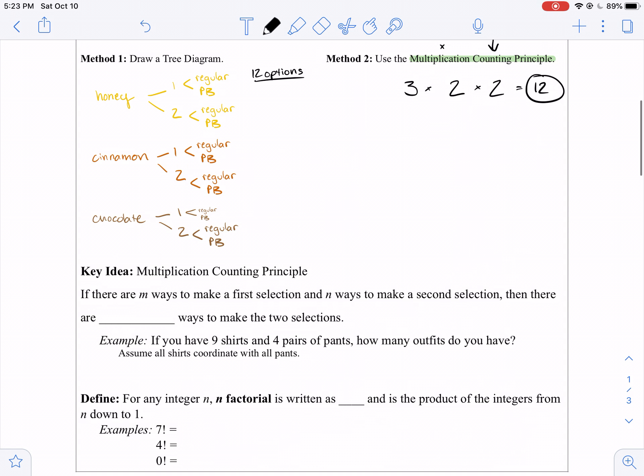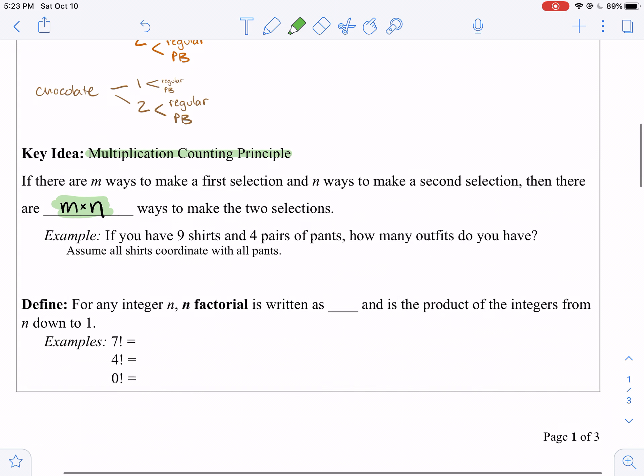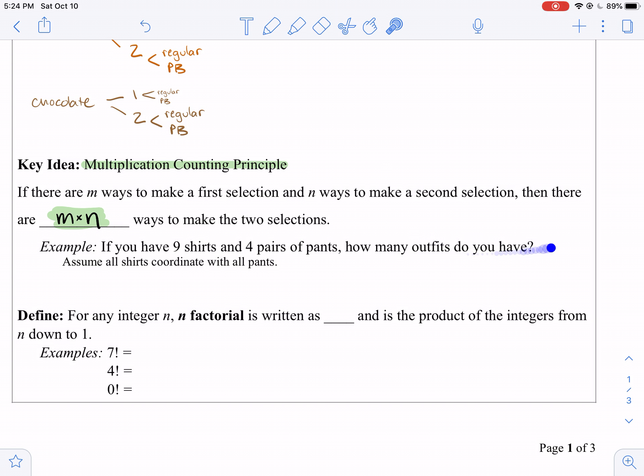So in a general case, the multiplication counting principle says, if there are M ways to make a first selection and N ways to make a second selection, then there are M times N ways to make those selections with both categories. For example, if you have 9 shirts and 4 pairs of pants, how many outfit combinations do you have? We're going to assume here that all the shirts go with all the pants. And that would be 9 times 4, which is 36 outfit combinations.